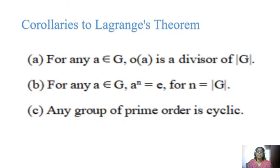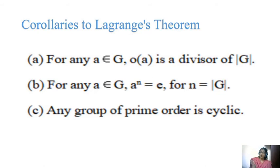Corollary to Lagrange's theorem: the order of A divides the order of G. For any element A in G, the order of A is a divisor of |G|. For any A belonging to G, A^N equals E for N equal to |G|. Any group of prime order is cyclic — groups of order 2, 3, and 5 are cyclic groups.